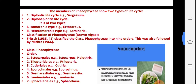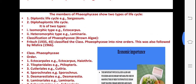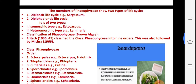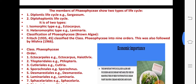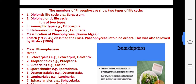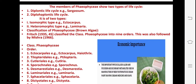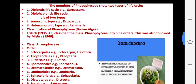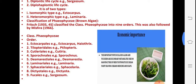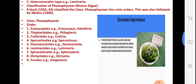In life cycle pattern, there are two types: diplontic life cycle and diplo-haplontic life cycle. Diplontic is seen in Sargassum. Diplo-haplontic is seen in Ectocarpus and Laminaria, which shows isomorphic (same morphology) and heteromorphic (two thalli are different) conditions — the heteromorphic type is seen in Laminaria.